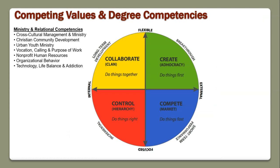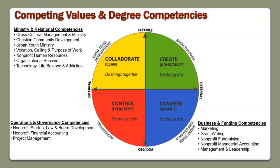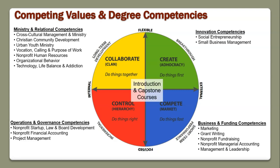Our ministry and relational courses include cross-cultural courses, Christian community development, urban youth ministry, human resources, and organizational behavior. The business and funding competency covers marketing, grant writing, nonprofit fundraising, nonprofit managerial accounting, management, and leadership. Operations courses include nonprofit startup, law and board development, nonprofit financial accounting, and project management. Innovation competencies include social entrepreneurship and small business management. What makes this capstone course unique is it's not in any of those quadrants — it integrates all four.